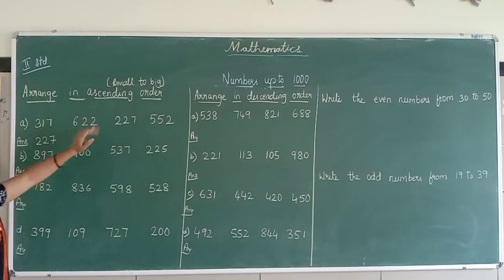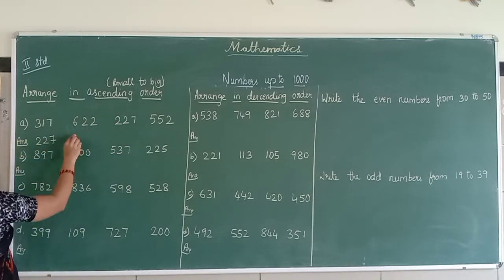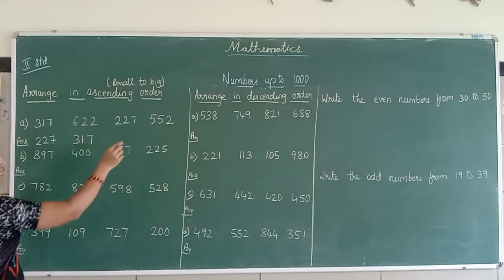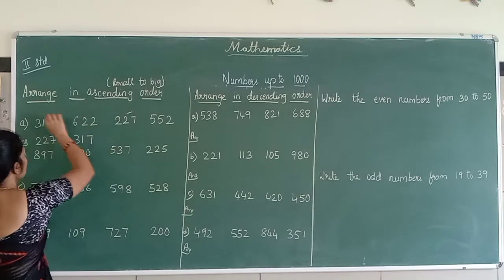So I am taking 2. So next small digit is what? 3, 317. Okay, next. This is over, this is done. Okay.